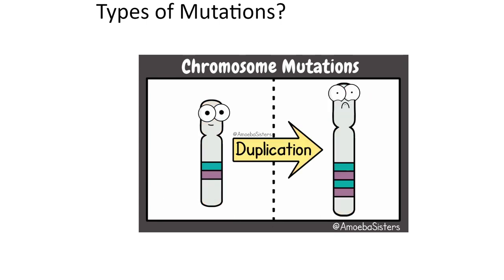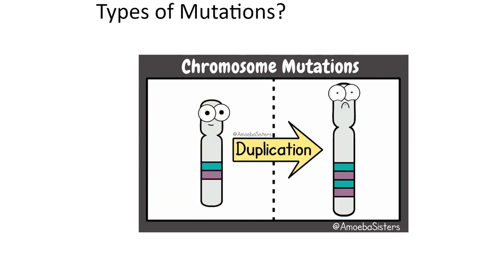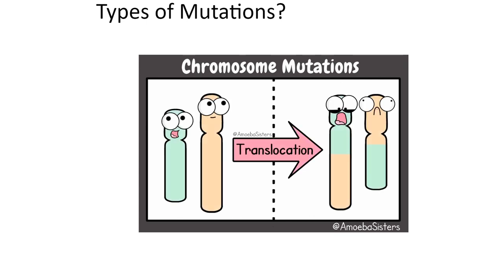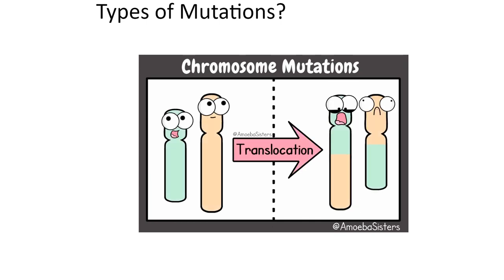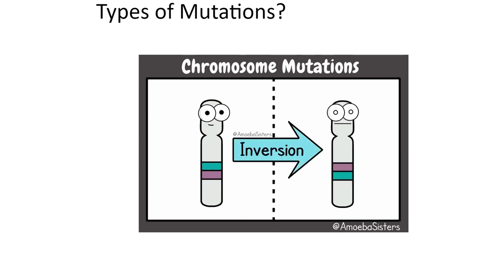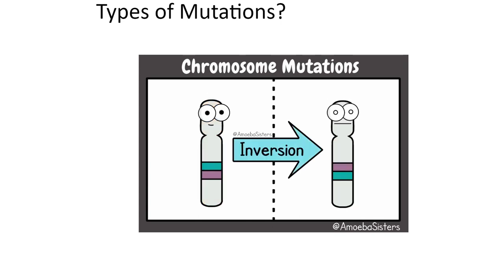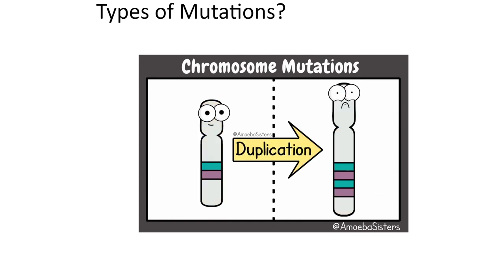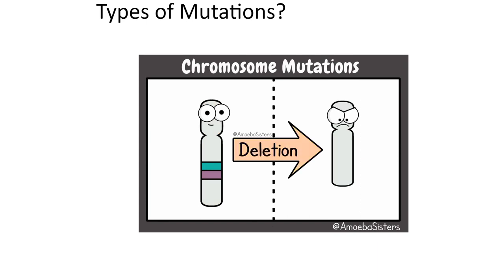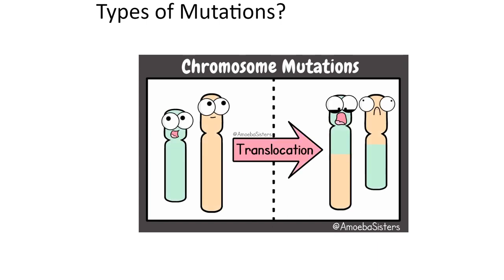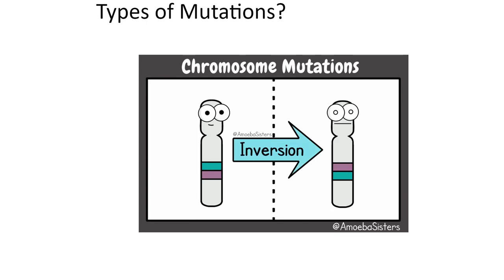Stepping back to the chromosome level: chromosomes contain billions of nucleotides across many genes and non-coding regions. Changing entire sections of a chromosome produces dramatic effects. Types of chromosomal mutations include deletions that remove entire portions, duplications that add an extra copy of a section, inversions that flip a segment so one gene comes before another, and translocations where a portion of one chromosome moves to another chromosome.